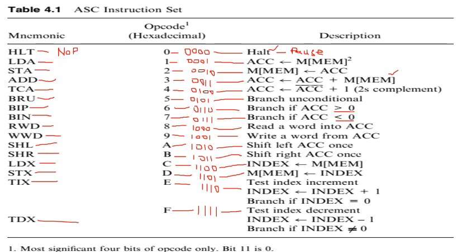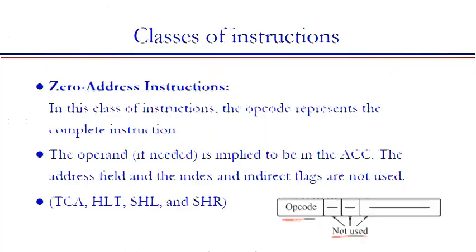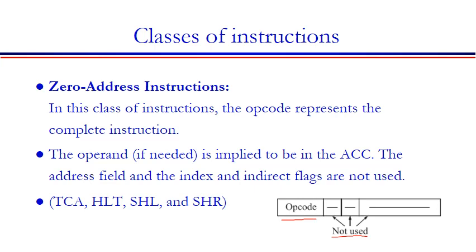The TIX instruction with opcode E means test index increment. In TIX, the index register value is incremented by one. The binary representation is 1110. The TDX instruction stands for test index decrement, with opcode F. These instructions are used to test and modify the index register value.